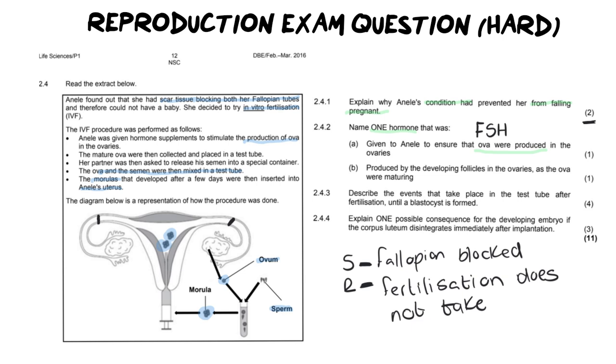Moving on to our next question. It says, name one hormone that was produced by developing follicles in the ovary. Again, this should be a recall question. We should know this off the top of our head. The hormone that is produced by developing ova is going to be estrogen. So those two are pretty easy.